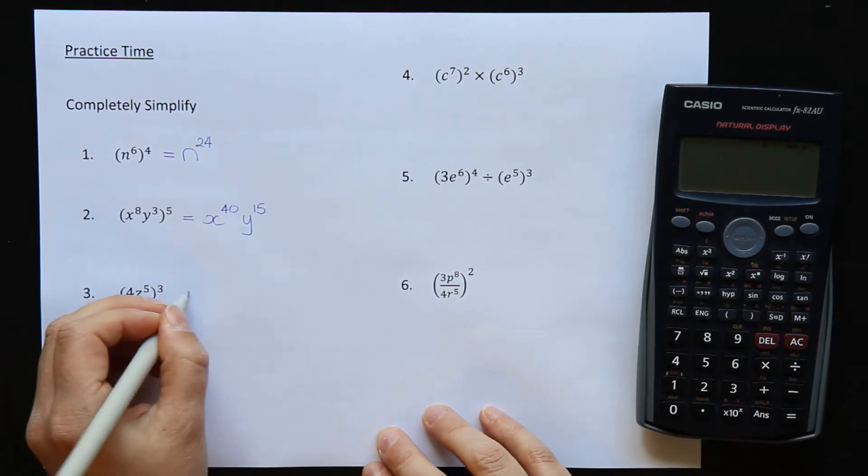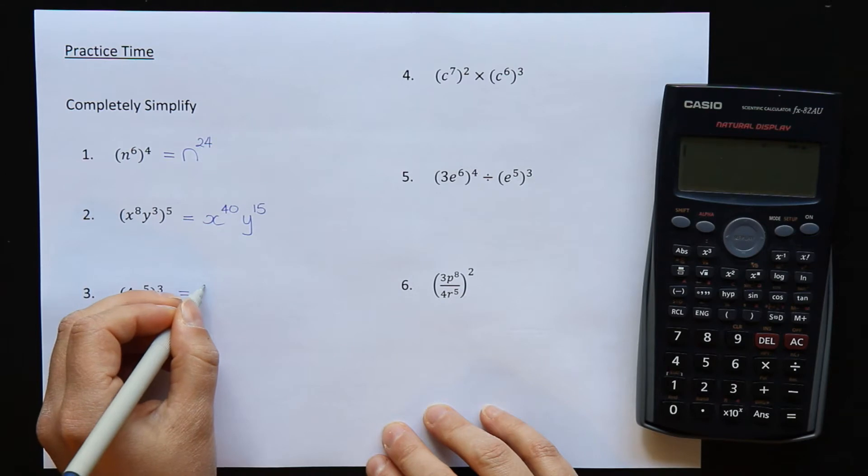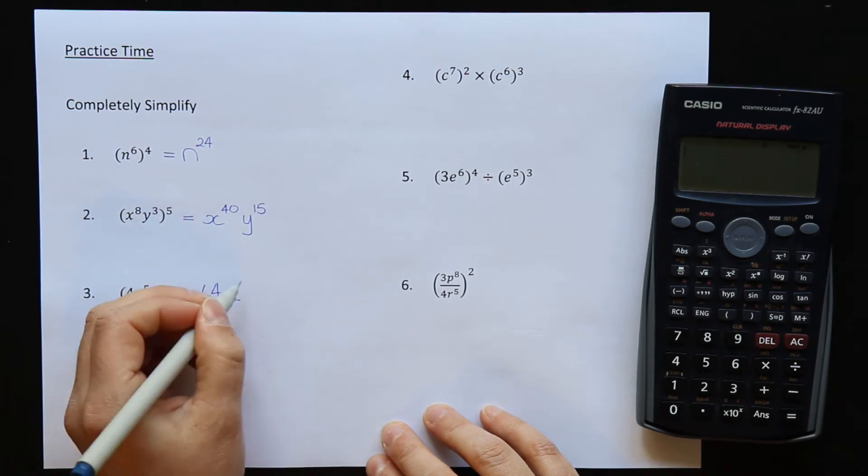Question 3. With the large number here at the front I have to do 4 to the power of 3 which is 64. Z is the base and 5 times 3 is 15.